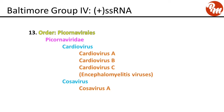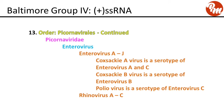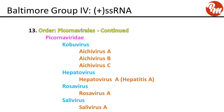Next, order picornavirales, family Picornaviridae. Genus cardiovirus includes cardiovirus A, B, and C. Genus cosavirus includes cosavirus A. Genus enterovirus encompasses enteroviruses A through J; notable serotypes include coxsackievirus A (enterovirus A and C), coxsackievirus B (enterovirus B), poliovirus (enterovirus C), and rhinoviruses. Genus kobuvirus includes aichivirus A, B, and C. Genus hepatovirus includes hepatovirus A (hepatitis A virus). Genus rosavirus includes rosavirus A, and salivirus includes salivirus A.